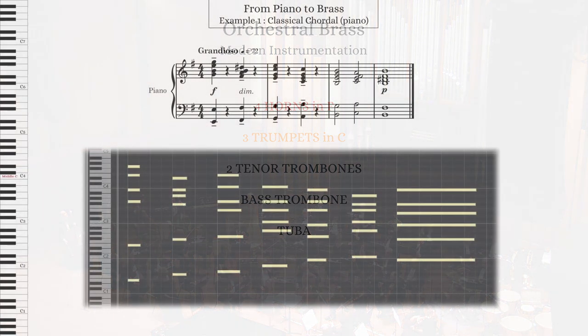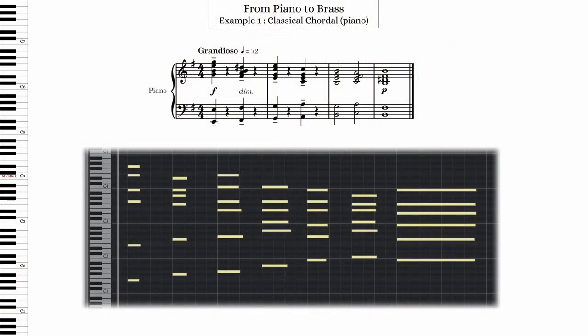So let's take a look at the first example, which features a classical progression of homophonic chords in the key of E minor. This example will allow us to consider vertical pitch ordering in the brass section. Here's what it sounds like on piano.